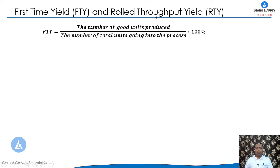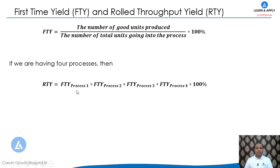First Time Yield is calculated as the ratio of the number of good units produced divided by the total number of units going into the process, multiplied by 100%. Roll Throughput Yield (RTY) is the multiplication of the first time yield of each process. If there are four processes, RTY equals FTY of process 1 × FTY of process 2 × FTY of process 3 × FTY of process 4, multiplied by 100%.